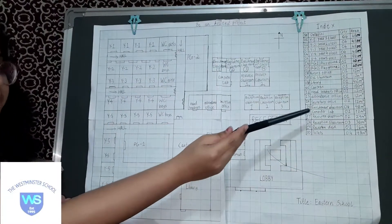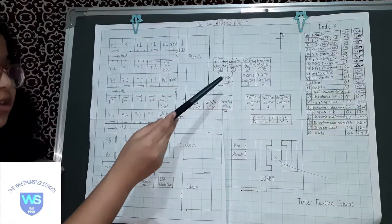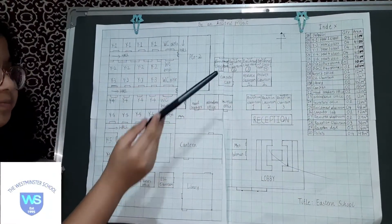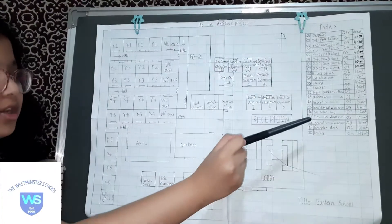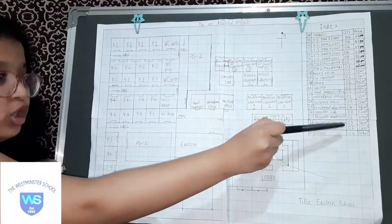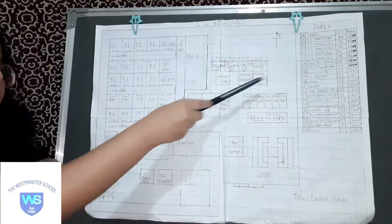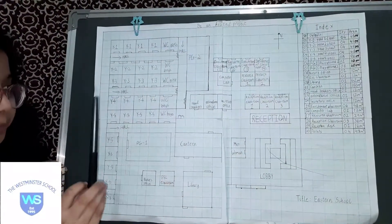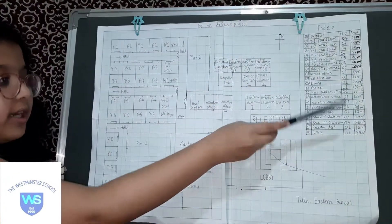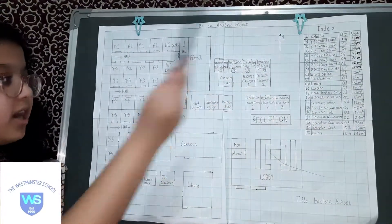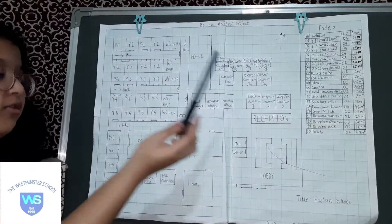We have the computer lab, which is quantity 1 and 12 meter square as its area — it's over here. Now we have the resource classrooms, which have quantity 2 and 24 meter square as their area. The resource classrooms are over here, and you can see that there are two. Then we have the reception classrooms, which have quantity 3 and 36 meter square as their area — right behind the reception desk.